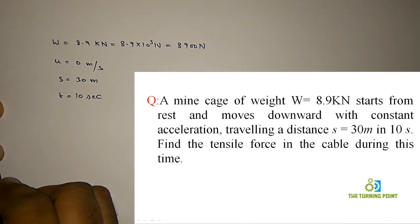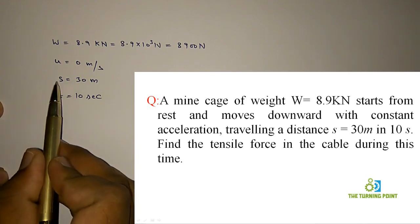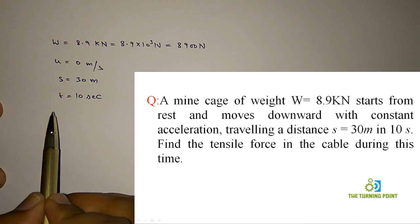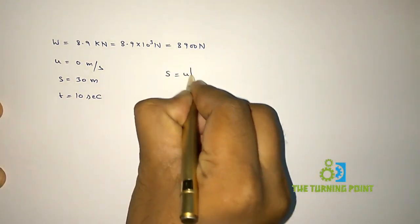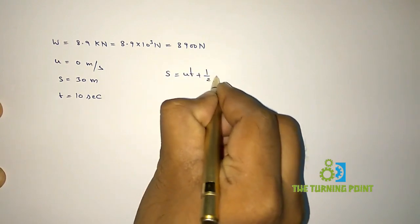So what are we to find in the problem? First you need to find acceleration. So S is there, U is there, T is there. I want to find acceleration, so I can use the relation S equals ut plus half at squared.